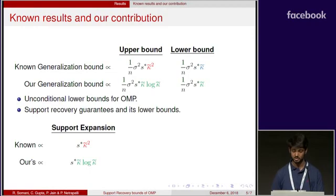The known results on support recovery for sparse regression algorithms require a support expansion level proportional to kappa tilde squared.